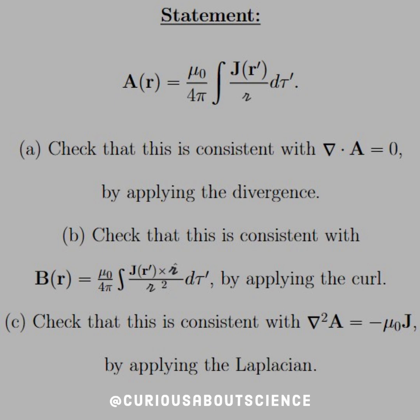And then c, check that this is consistent with del squared A equals negative mu naught J by applying the Laplacian.